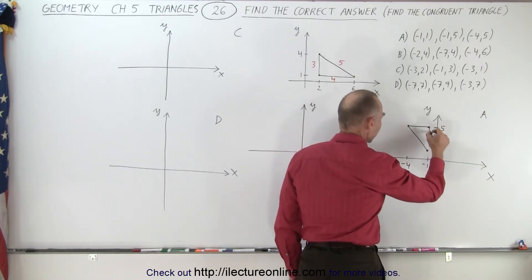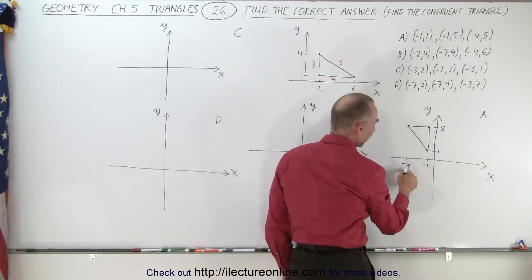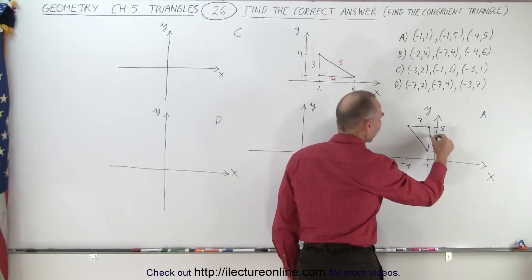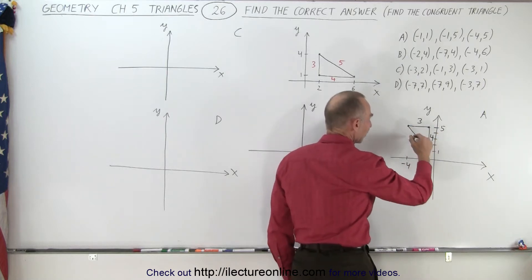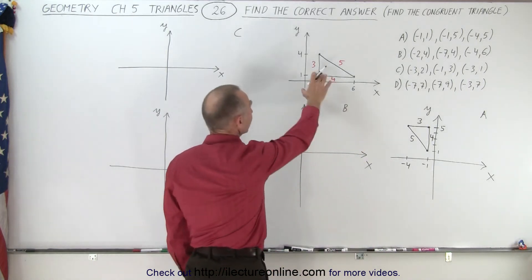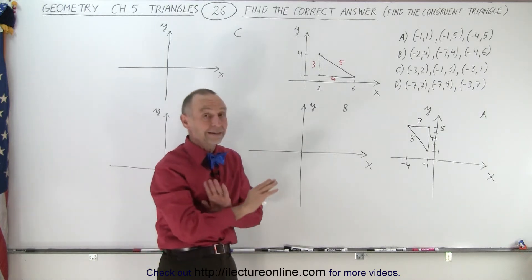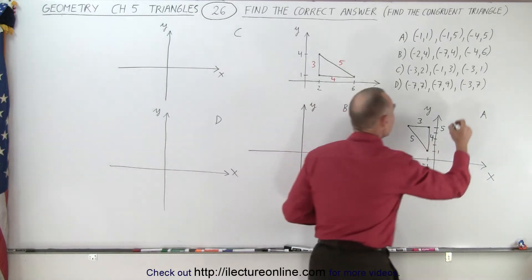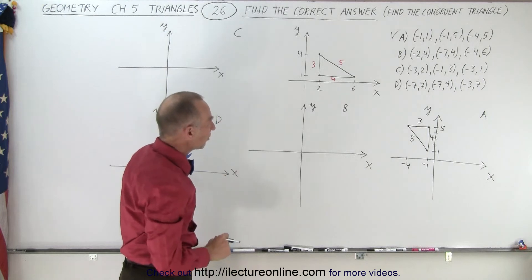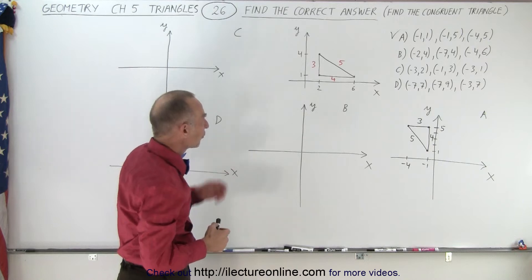Now connecting those points, notice: from here to here we go from negative one to negative four, so that side has length three. From one to five, that side has length four, and therefore the third side must be five — a 3-4-5 triangle. We've already found a congruent triangle. We know it's congruent because the corresponding sides have the same length, which is the only necessary condition. A is definitely one answer, but let's check if there are more.